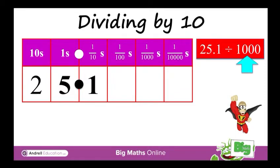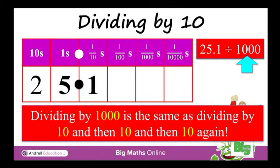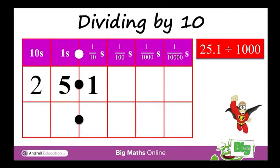So we're dividing by 1000, which means 25.1 is going to become 1000 times smaller. Dividing by 1000 is the same as dividing by 10 and then 10 again and then 10 again. So if you can divide by 10, you can divide by 1000 — you're just repeating the same steps.